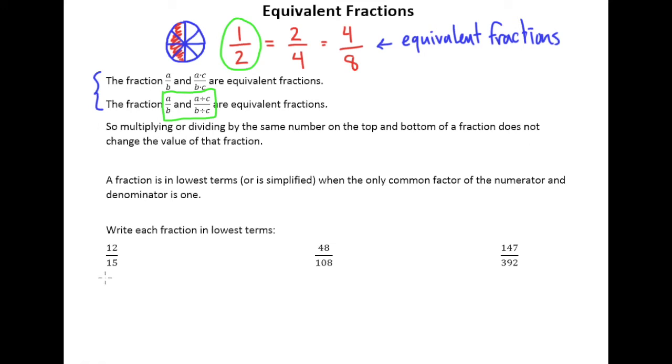So if you see an example like 12 fifteenths, where the numbers aren't overly large, my suggestion is to try to find the greatest common factor right away. What is the largest number that goes into both 12 and 15? And I think we can see without too much work that the largest number that goes into both is 3.